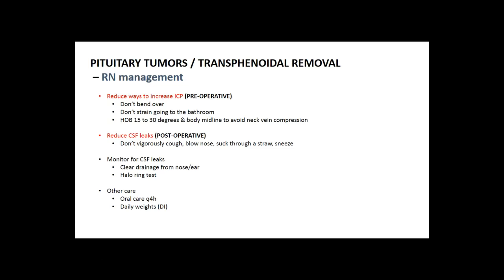The surgery is done through a transnasal/transsphenoidal removal, which is up through the nares. Things to talk to patients about pre-operatively include ways to reduce increased intracranial pressure: not bending over, not straining to go to the restroom — use medications like Colace, MiraLax, or milk of magnesia. The head of the bed should be 15–30 degrees to help reduce intracranial pressure, and try to keep the body midline to avoid any neck vein compression.